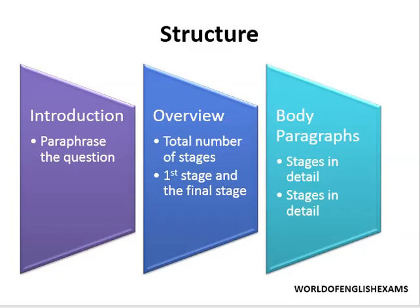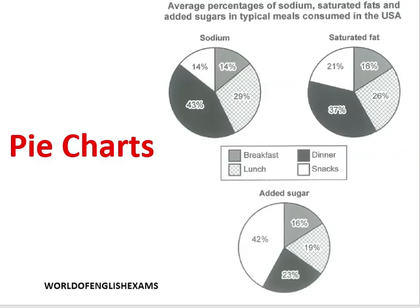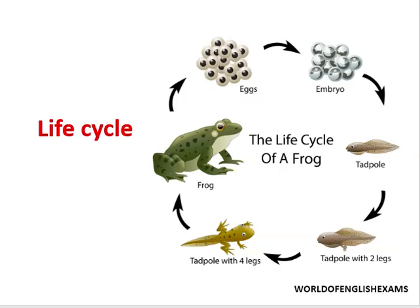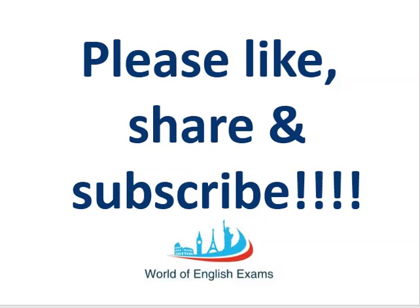In this video, we have covered various types of illustrations for IELTS academic writing task 1, beginning with maps, then pie charts, line graphs, bar graphs, tables, flow charts, and life cycles. Remember that combinations are also possible, so practice each illustration type in detail with the structure shown. If you found this video useful, please give it a thumbs up, share it with your friends, and subscribe to our channel World of English Exams. Thank you so much for watching, and happy preparation!